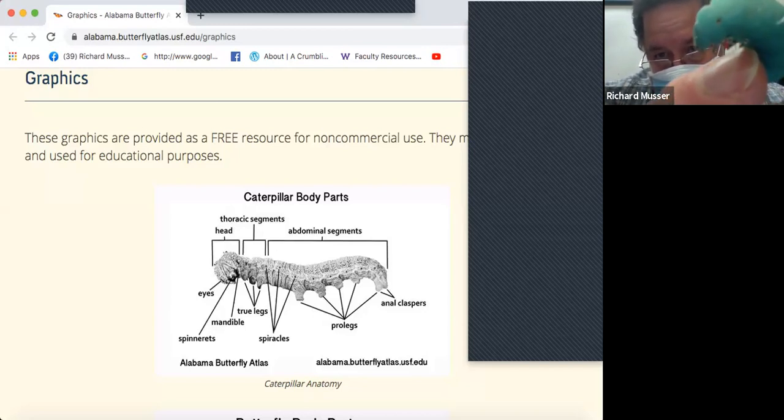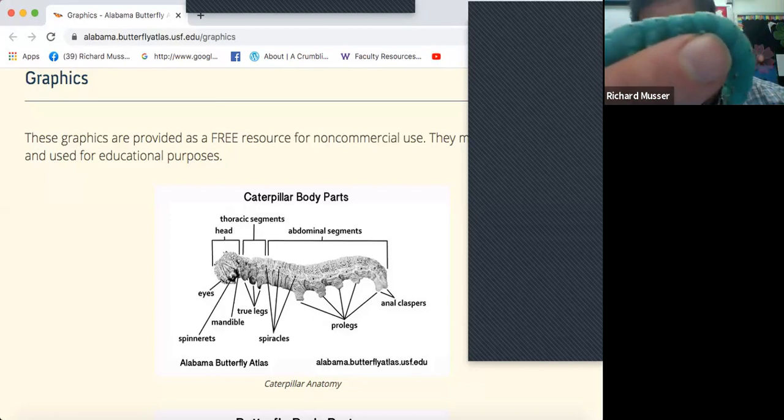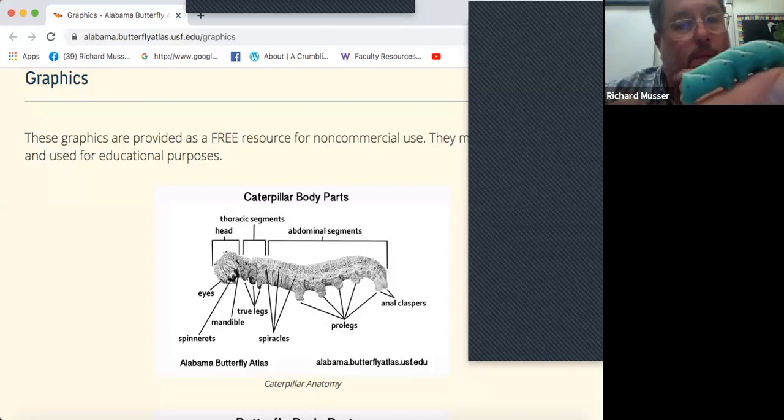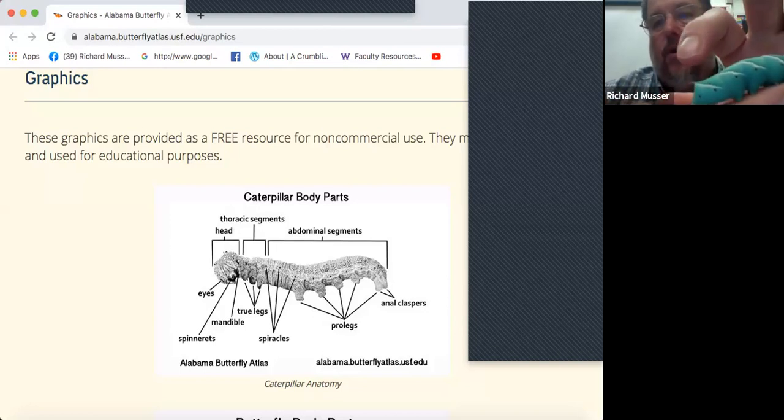That dot there is actually a spiracle. All these little dots you see along the side of the body are what we call spiracles. Spiracles are openings that can open and close. They'll close if they fall in water. They allow air to enter the insect. Caterpillars don't breathe air directly through their mouths - they're breathing through these holes called spiracles.